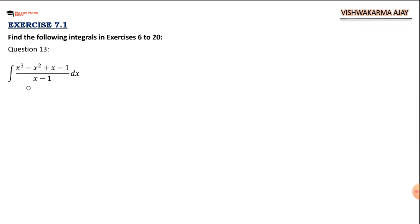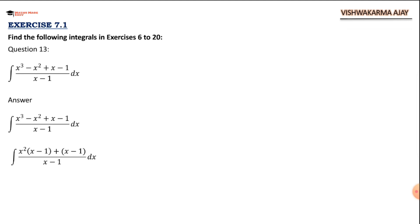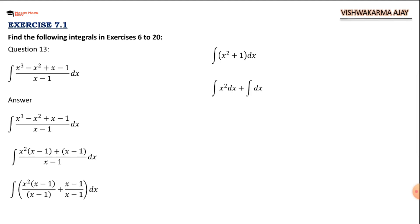Question 13: integral of (x³ − x² + x − 1)/(x − 1) dx. First simplify: factor the numerator by taking x² common from the first two terms, giving x²(x − 1) + (x − 1) = (x² + 1)(x − 1). The (x − 1) factors cancel, leaving the integral of (x² + 1) dx, which gives x³/3 + x + c.